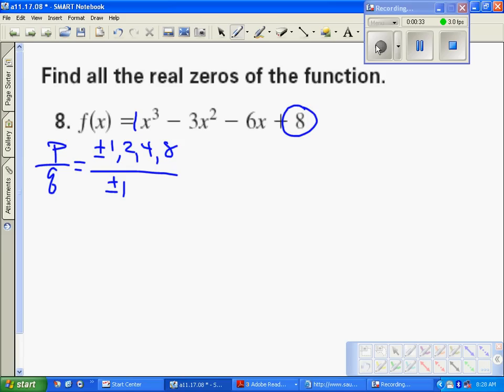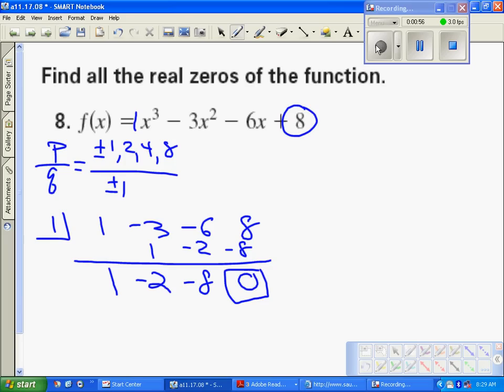We now need to start. Should we just go ahead and start with 1? Alright, so we're going to start with positive 1. We'll put that in the box. We got 1, -3, -6, +8. We're using synthetic division, and we multiply... and we get 0. That's what we were hoping for! We got lucky on the first one.